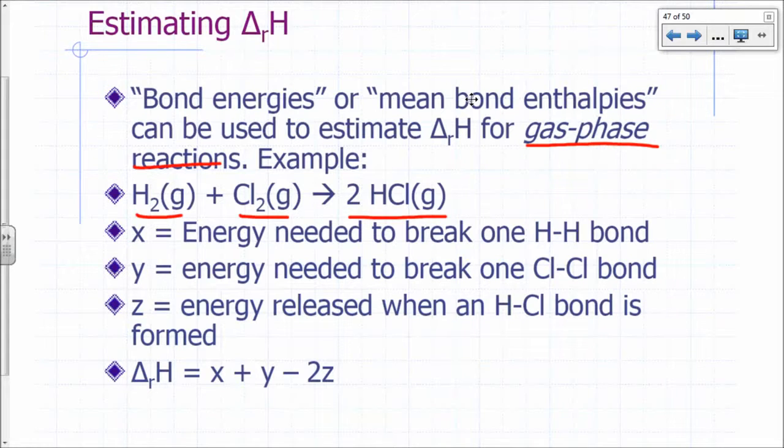You can calculate the energy needed to break one H-H bond, and you can look these up, the bond dissociation energy to break one Cl-Cl bond. And then if you define Z as the energy released when an H-Cl bond is formed, then delta H for this reaction is just X plus Y minus 2Z.